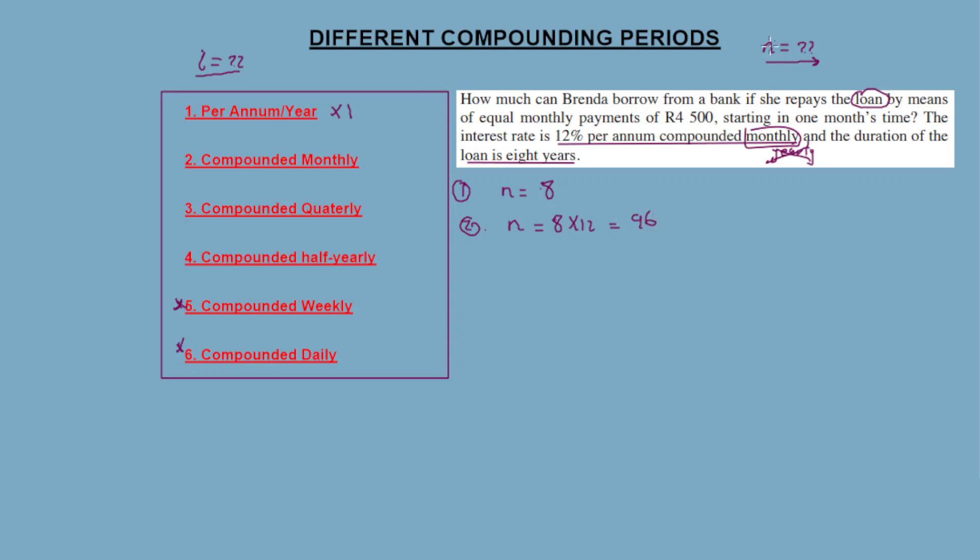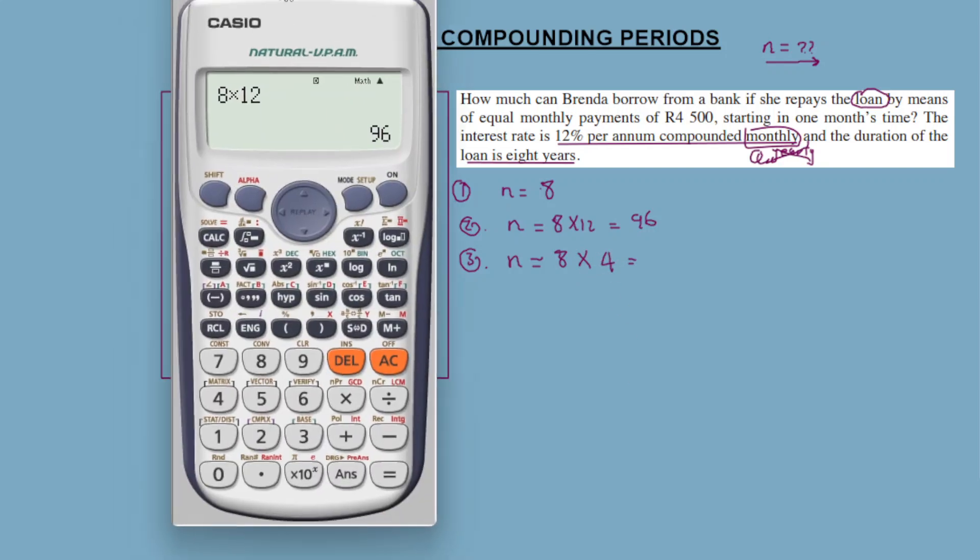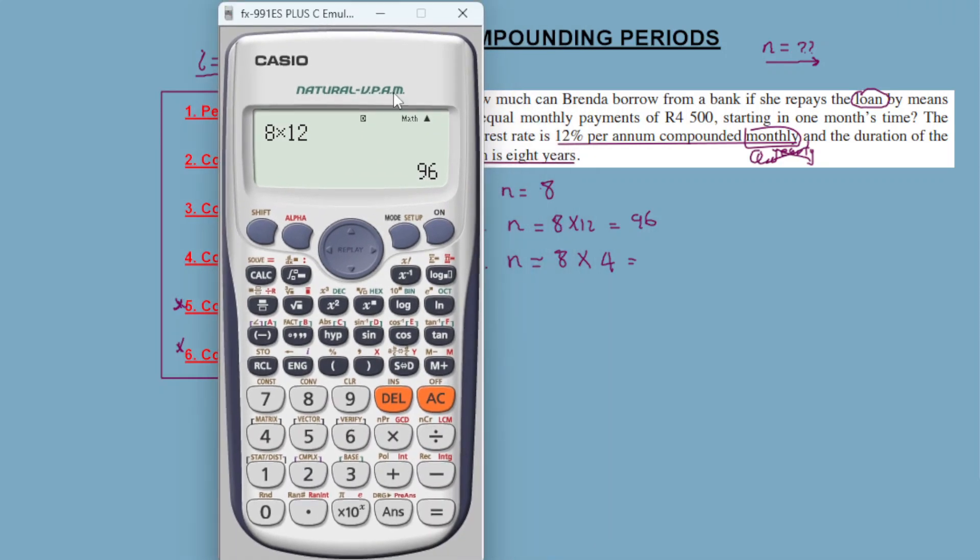Number three: n is equal to... if we're compounding quarterly, it's going to be 8 times 4. There's 4 quarters in a year. Think of the school calendar—there are 4 terms in a year. That's why it's multiplying by 4, because there's 4 quarters in a year. That equals 32.